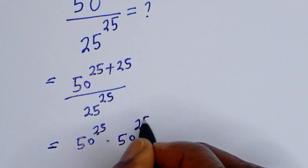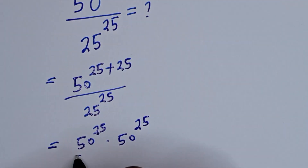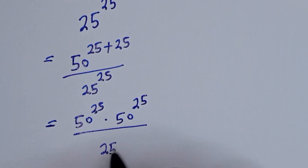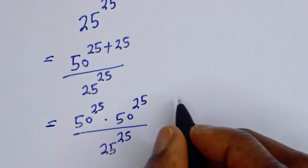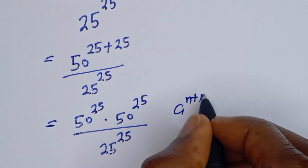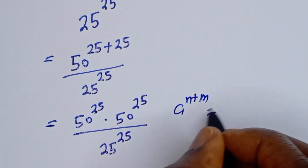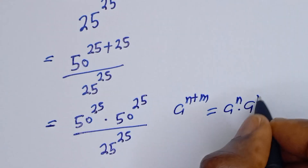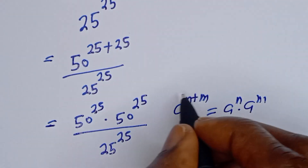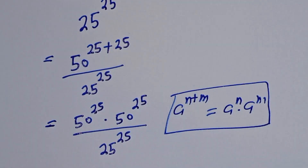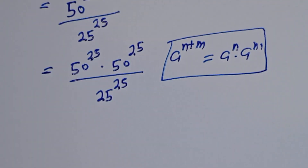That is, if you have a to the power of n plus m, this is equal to a to the power of n multiplied by a to the power of m.